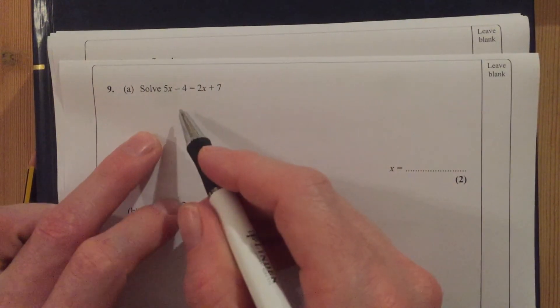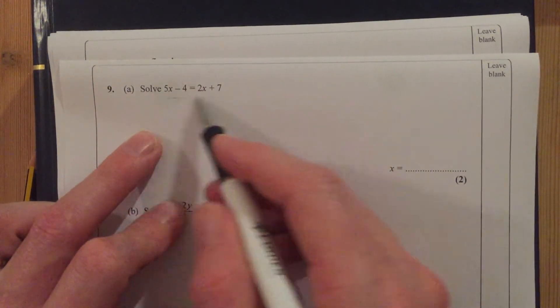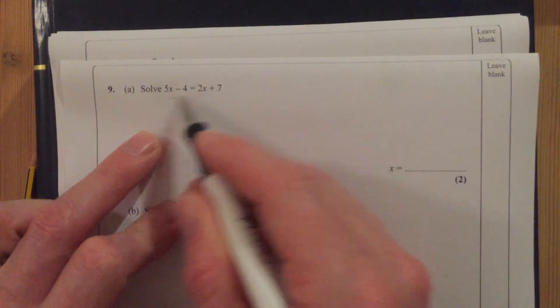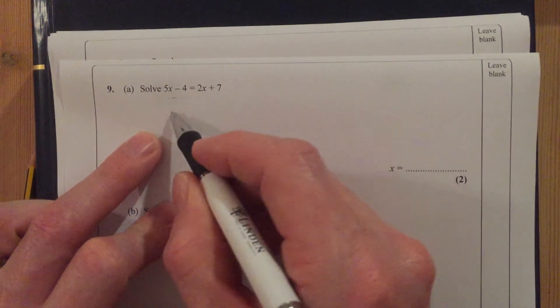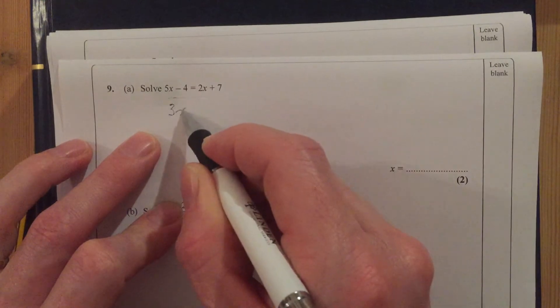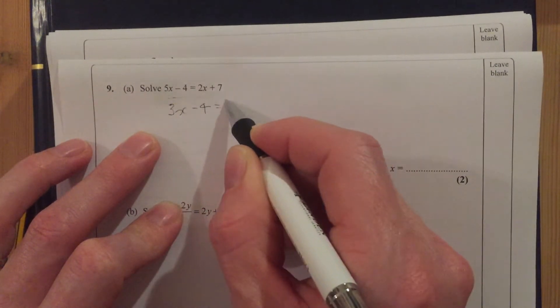Okay, we're gonna solve this one. I want to get the x's on the same side where they're positive, so we're going to take 2x off both sides and we're going to get 3x minus 4.